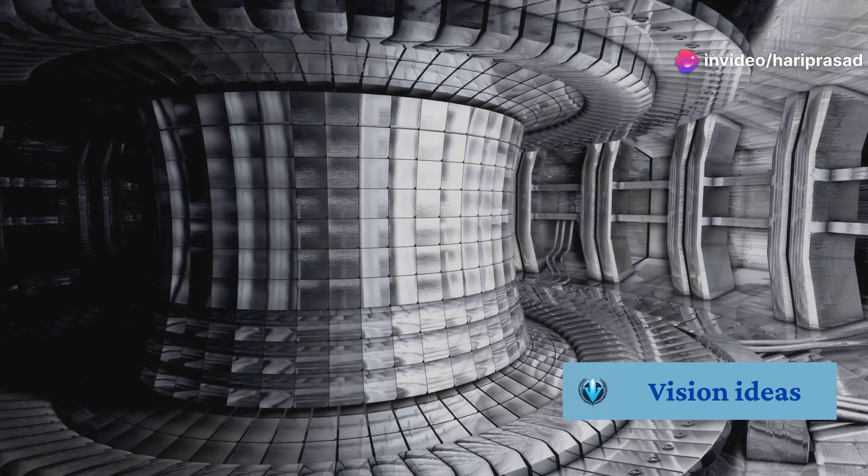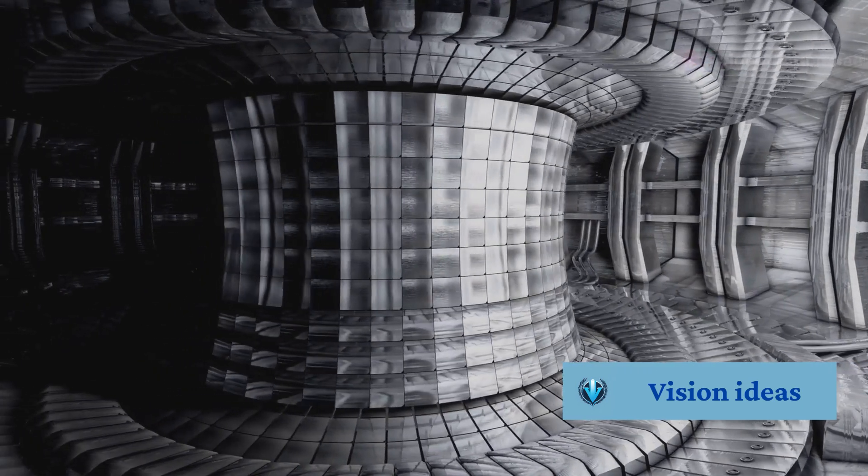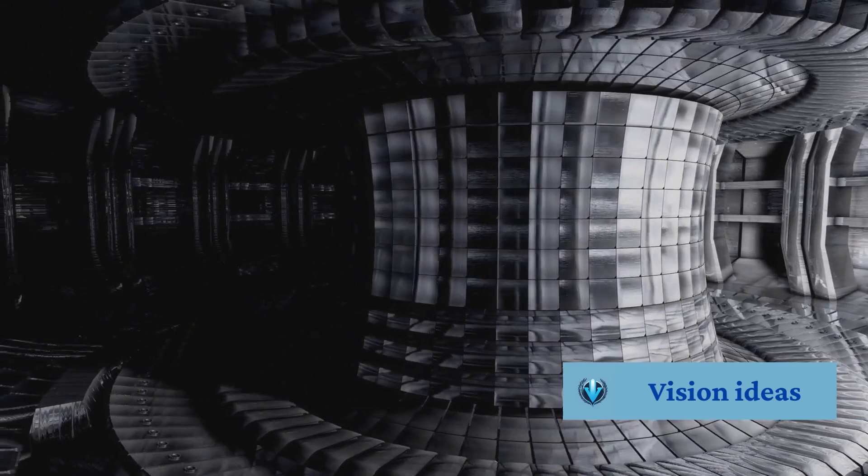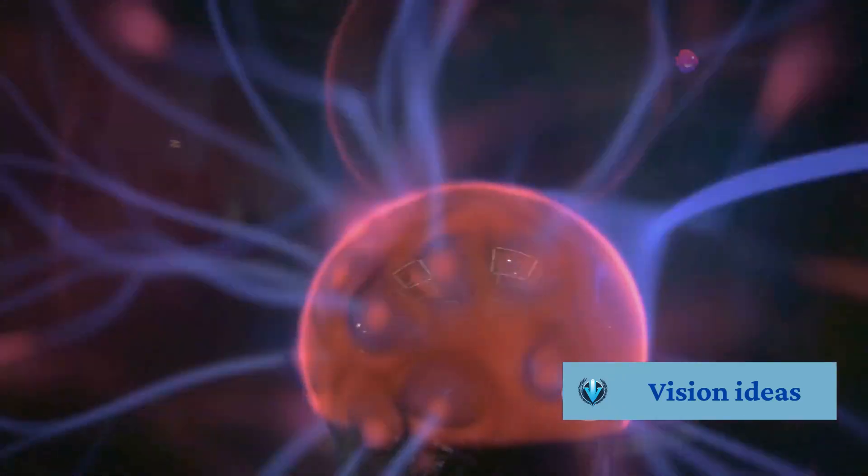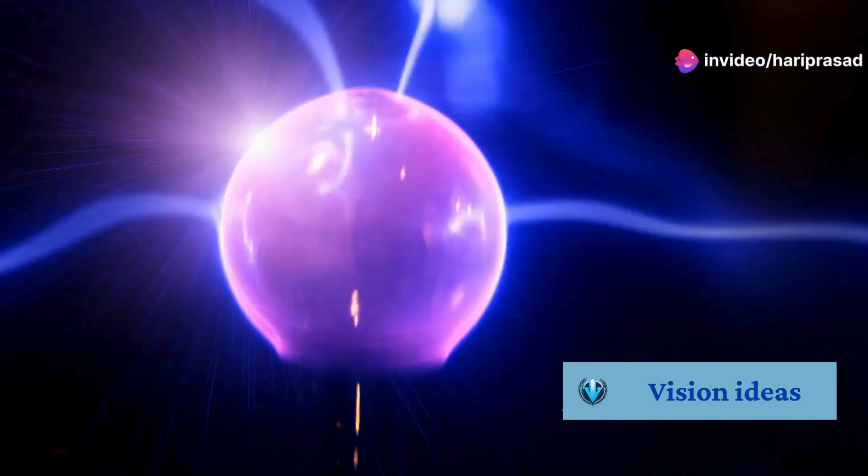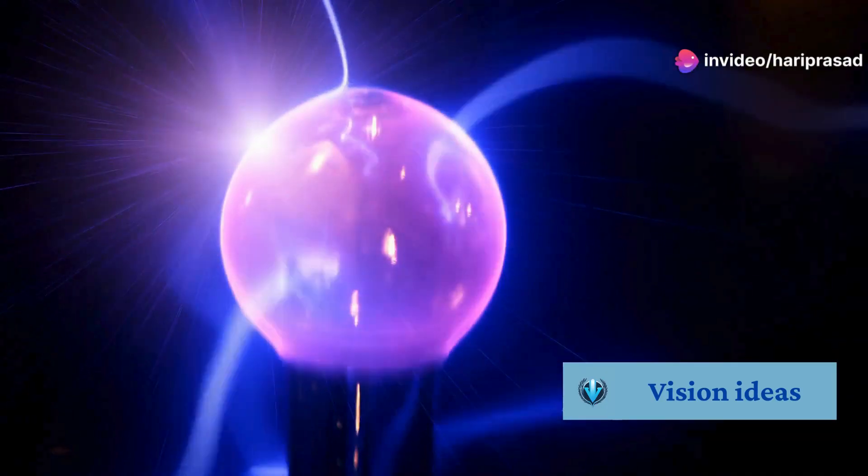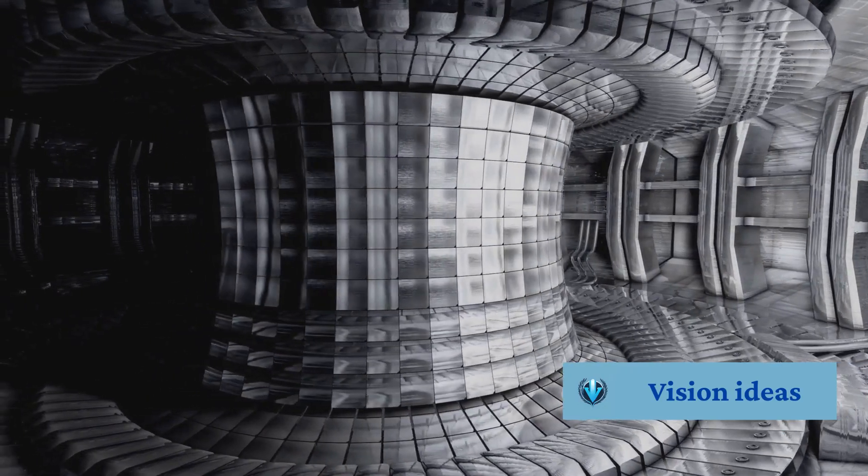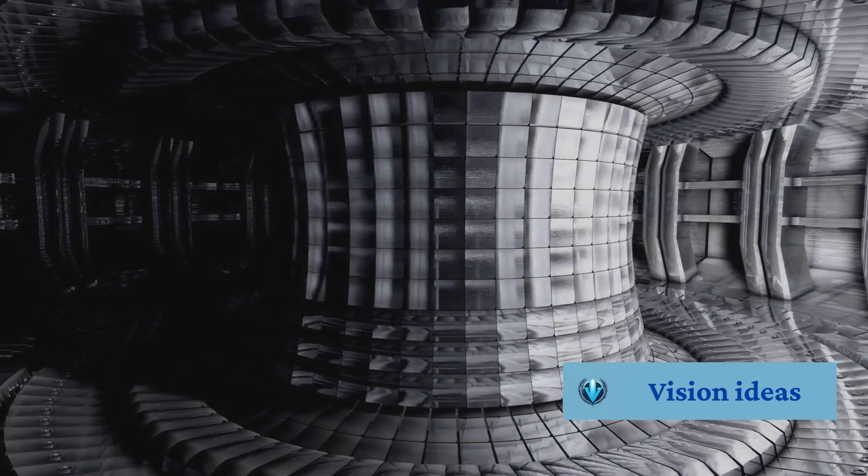In a fusion reactor, these isotopes are heated to extremely high temperatures, transforming them into a plasma. Plasma is often called the fourth state of matter. It's a superheated, electrically charged gas where electrons are stripped away from their atoms. This creates a sea of freely moving ions and electrons, ready to collide and fuse.